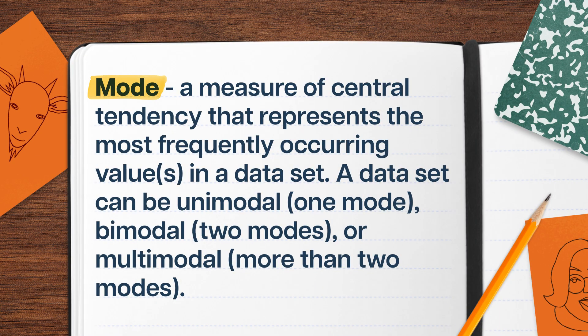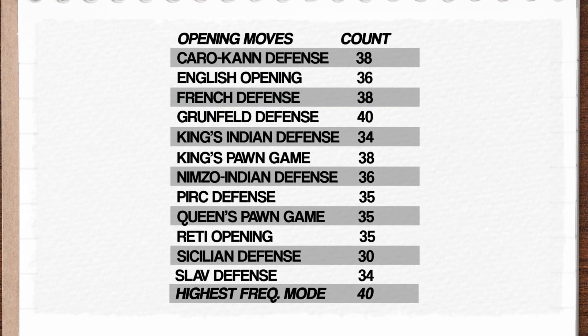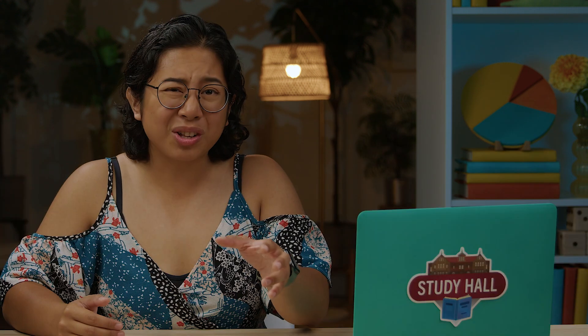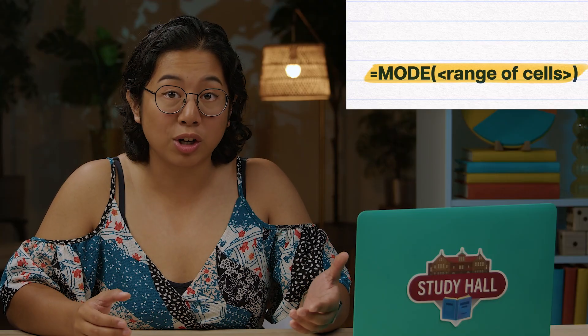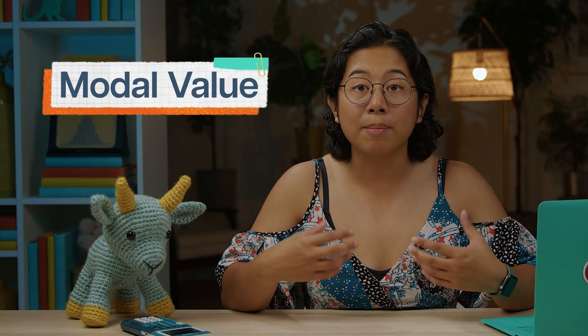Looking at the database of games played by previous players, Chen first creates a frequency table of the opening moves. He can then spot that the Grunfeld Defense is the most common opening move, since it has the highest number of counts in the frequency table. If his data was numerical, he could have simply used the MODE function in a spreadsheet to identify the most common number in a range of cells. The exact value of the mode — like the most common opening move — is often called the modal value. But if two data points are equally matched for the most frequent value, we say there are bimodal values. Like if the Nismo Indian Defense and the English Opening were tied, both would be considered the mode. And if there are two or more data points that occur most often, the data would be multimodal.